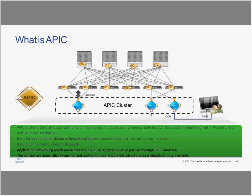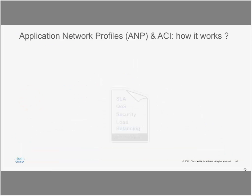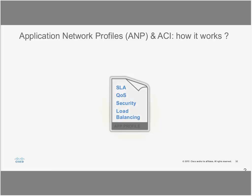The APIC controller talks to spine and leaf switches through management, with a policy engine on every switch. It's the interface point with virtual manager controllers and the spine/leaf switches. Importantly, it does not participate in the data plane — it sits on the control plane. So even if all APIC controllers go down, your traffic will continue and your policies and contracts remain in place. Here's a quick animation overview of how it works.